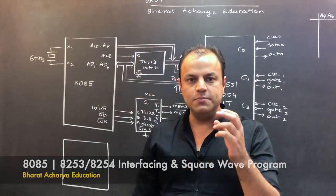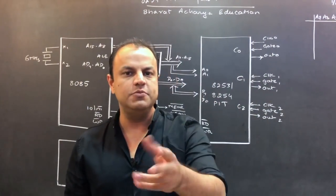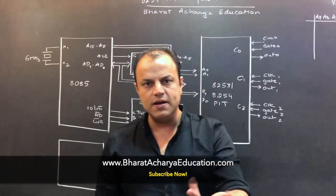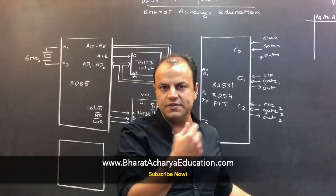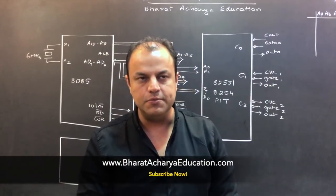They are called Programmable Interval Timers. There's a very small difference between 8253 and 8254. 8254 has a readback command, 8253 doesn't have, but that's got nothing to do with the interface. So even if you're learning 8253, the diagram applies exactly the same to you.